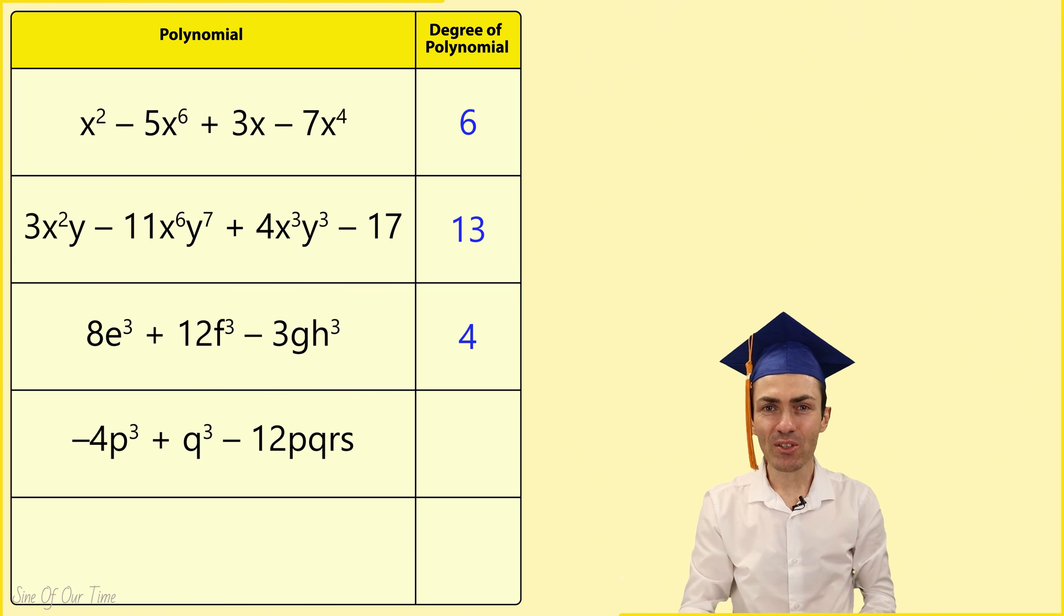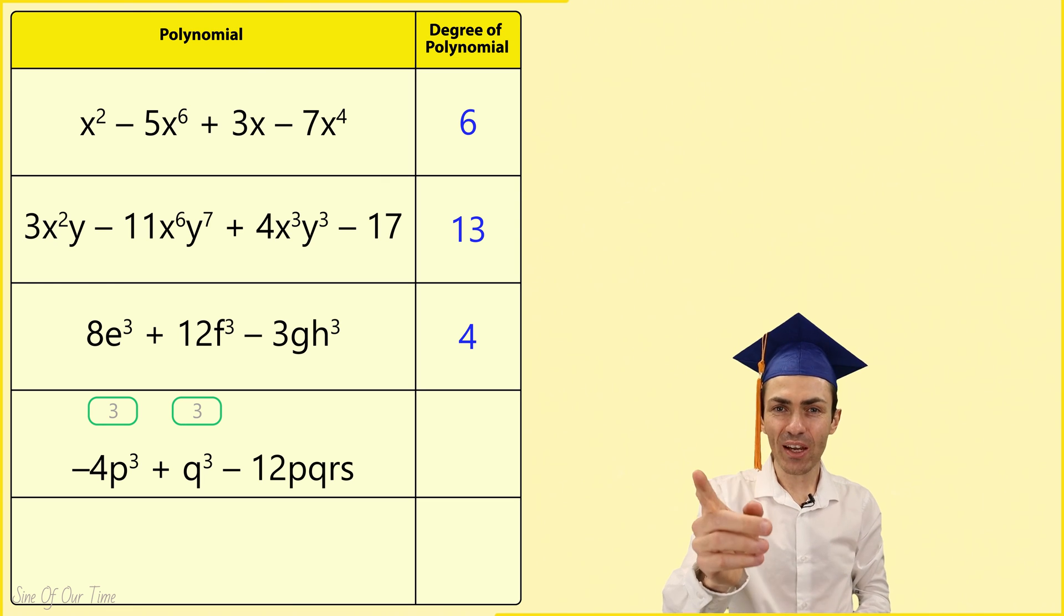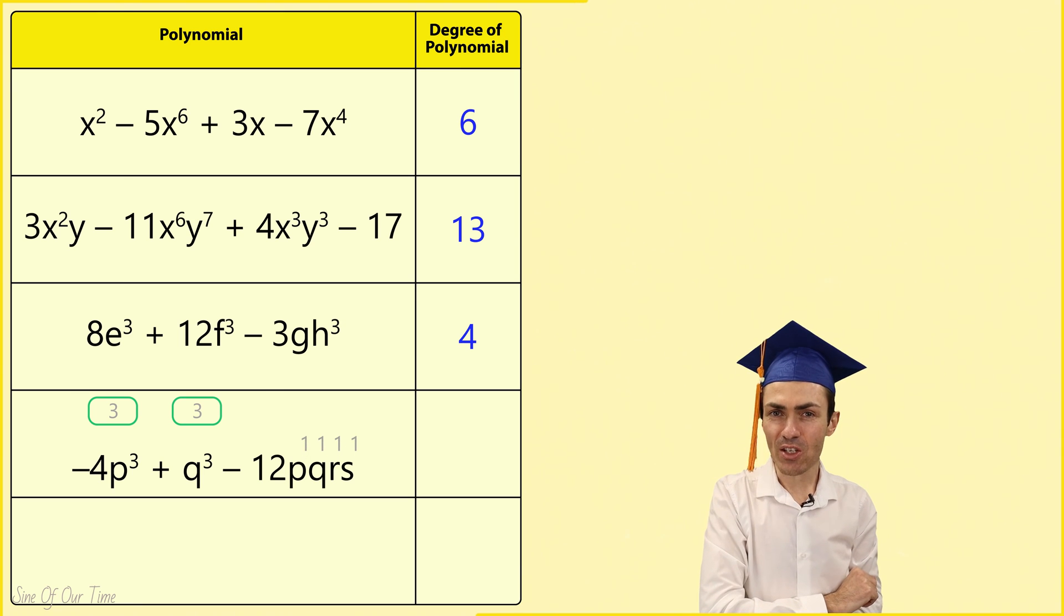Next we may be tempted to conclude that the degree of this polynomial is 3, because the degree of the first term is 3 and the degree of the second term is also 3. But the third term doesn't look like much until we add the values of the exponents of each of the variables.